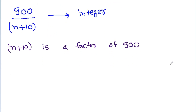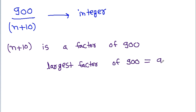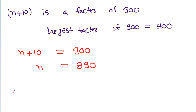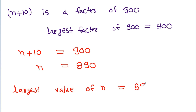And we have to find the largest value of n. So the largest value of n + 10 must be equal to 900 itself. From here, we get n + 10 = 900, and therefore n = 890. So the largest value of n is 890.